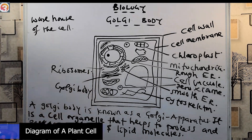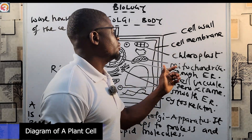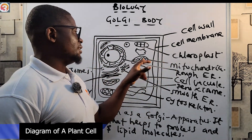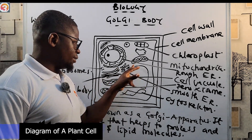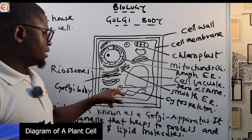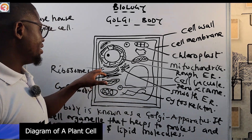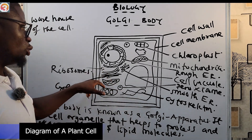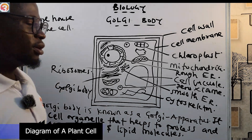And of course the Golgi body, and also ribosomes. So this diagram shows the different parts of the cell: cell wall, cell membrane, chloroplast, mitochondria, cell vacuole, peroxisome, cytoskeleton, ribosomes, and the Golgi body.